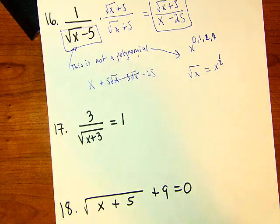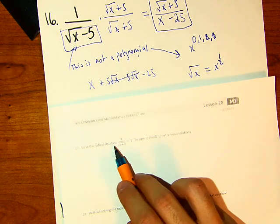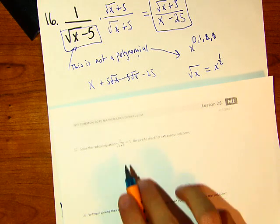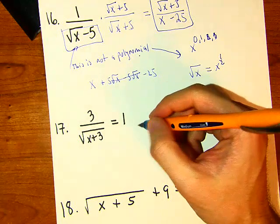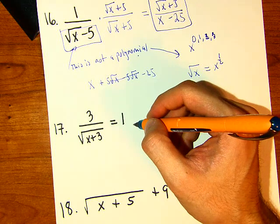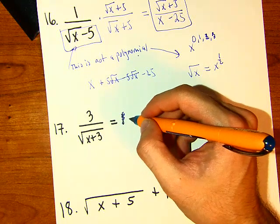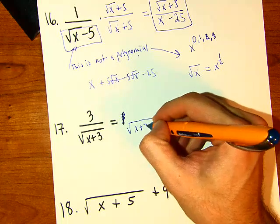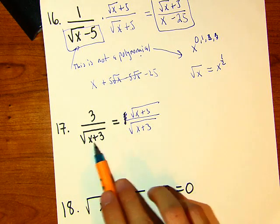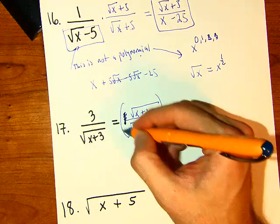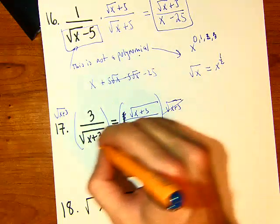For problem 17, we need to solve the radical equation and check for extraneous solutions. The equation is 3 over square root of x plus 3 equals 1. We can rewrite 1 as square root of x plus 3 over square root of x plus 3. Since the denominators are the same, multiply both sides by square root of x plus 3.